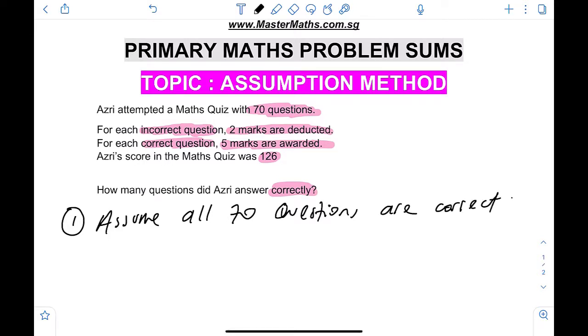Now, usually for the assumption method, we will assume the opposite. For example, if we want to know how many questions did he answer correctly, we would have assumed all to be incorrect. But because if you had done so, then your total marks for all the incorrect questions, if you said all 70 questions are incorrect, then the total marks for 70 questions will be 70 times negative 2. Then your marks will be a negative marks even below zero. So that is a very tough number to work with. So instead of that, we assume all are correct.